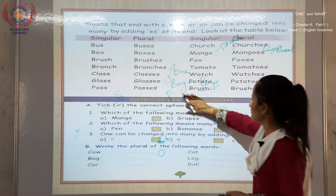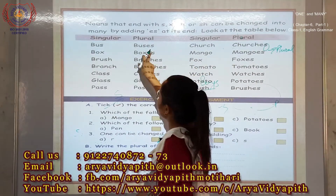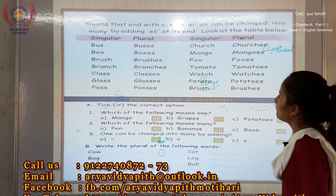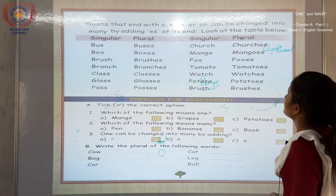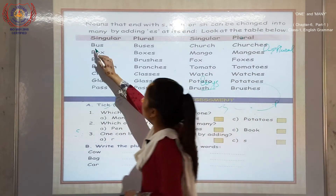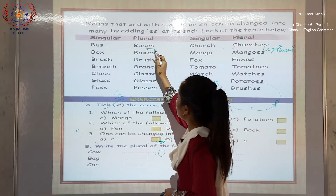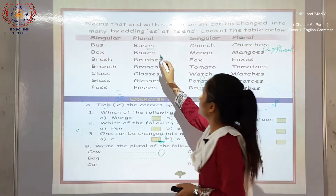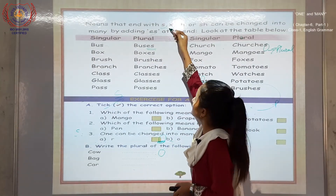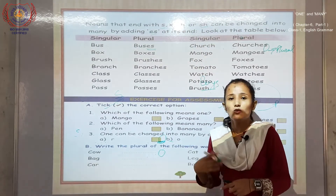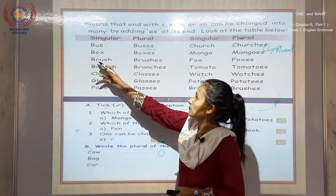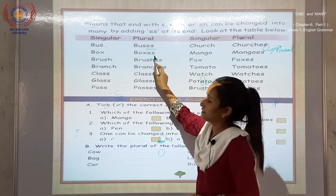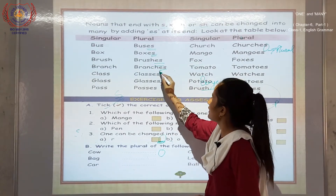Next page: singular and plural. Nouns that end with S, X, CH, or SH can be changed into plural by adding E-S at the end. Like B-U-S — bus — add E-S — buses. Whenever we have X, CH, or SH at the end, we have to use E-S. Like B-R-U-S-H — brush — add E-S — brushes.